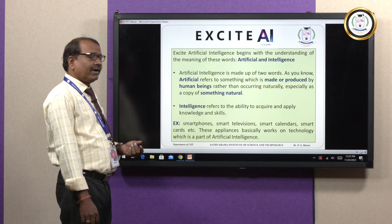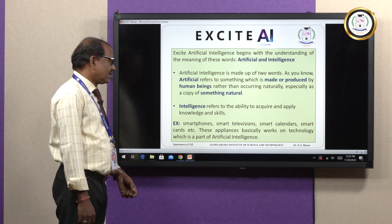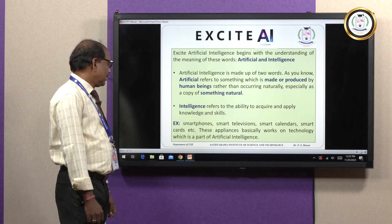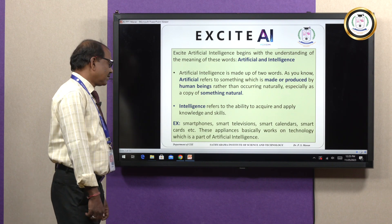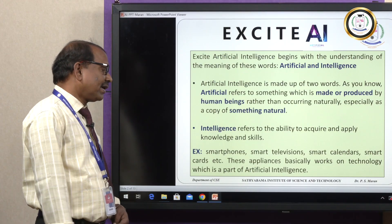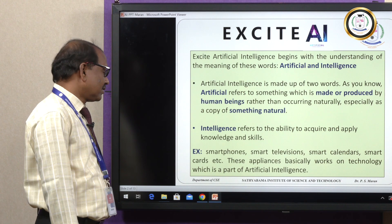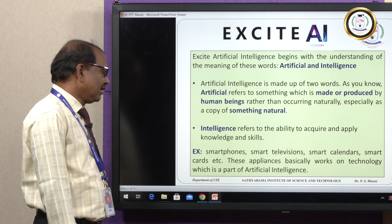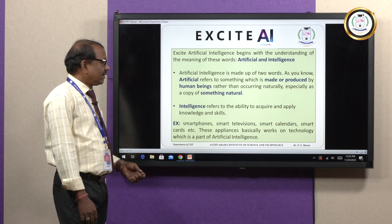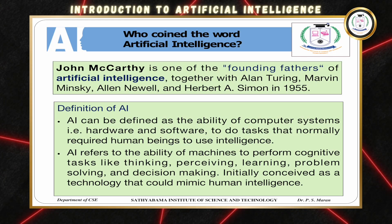For example, smartphones and smart televisions, smart calendars and smart cards — these are the appliances that basically work on technology which is under the part of artificial intelligence.